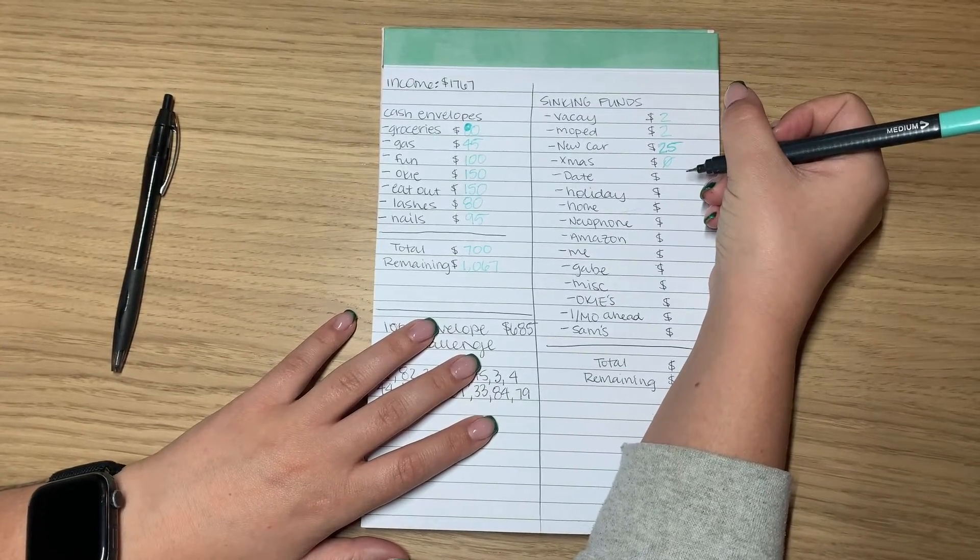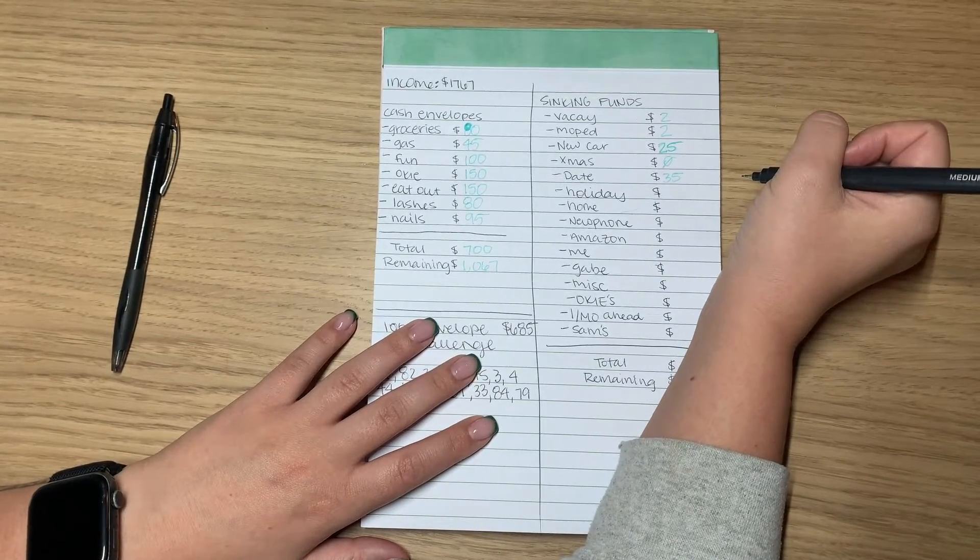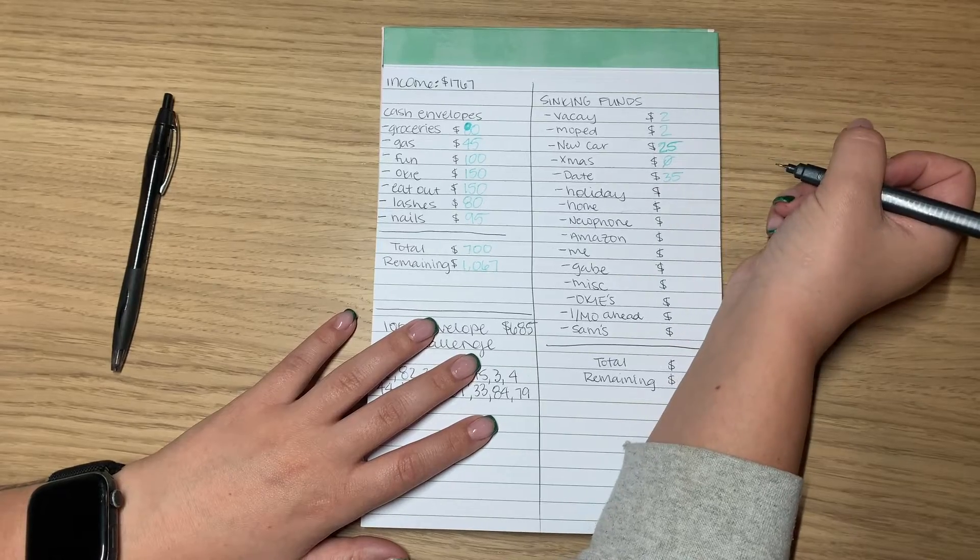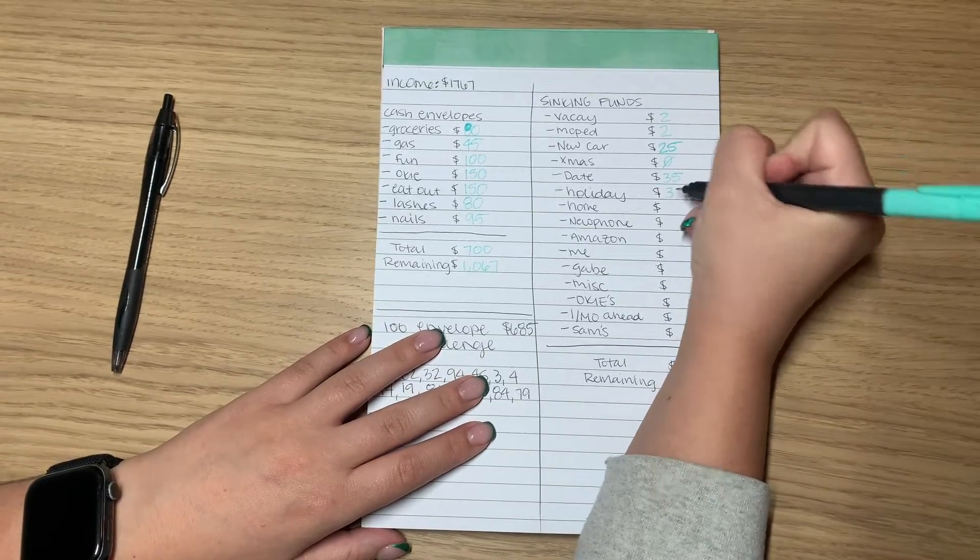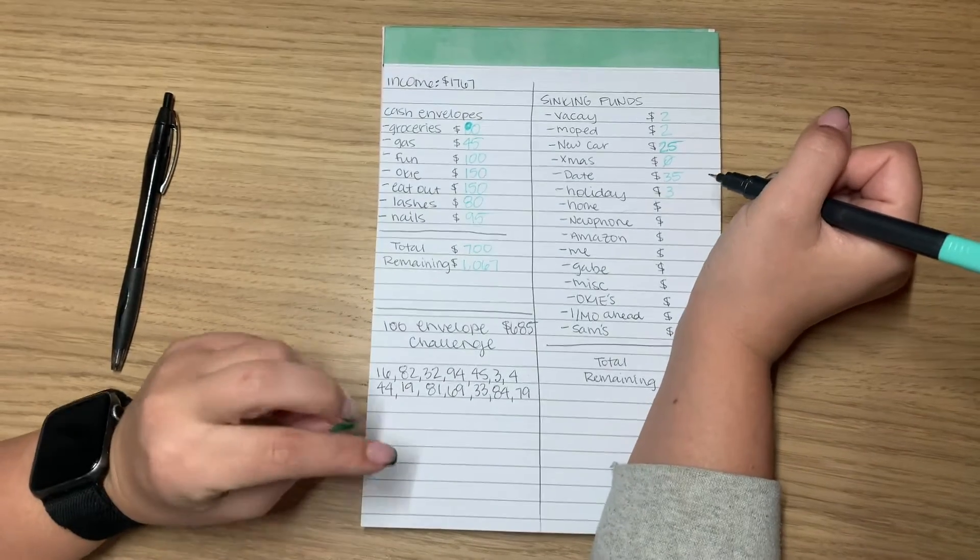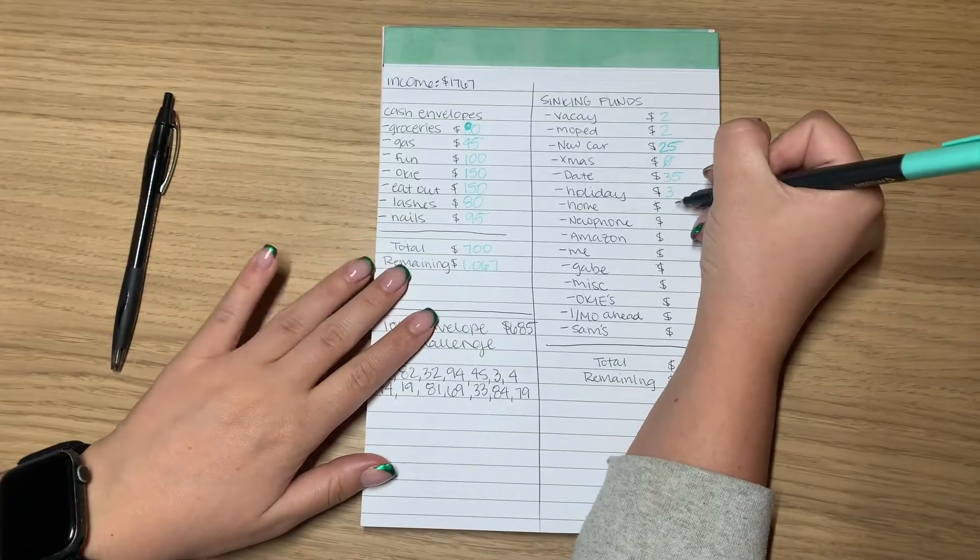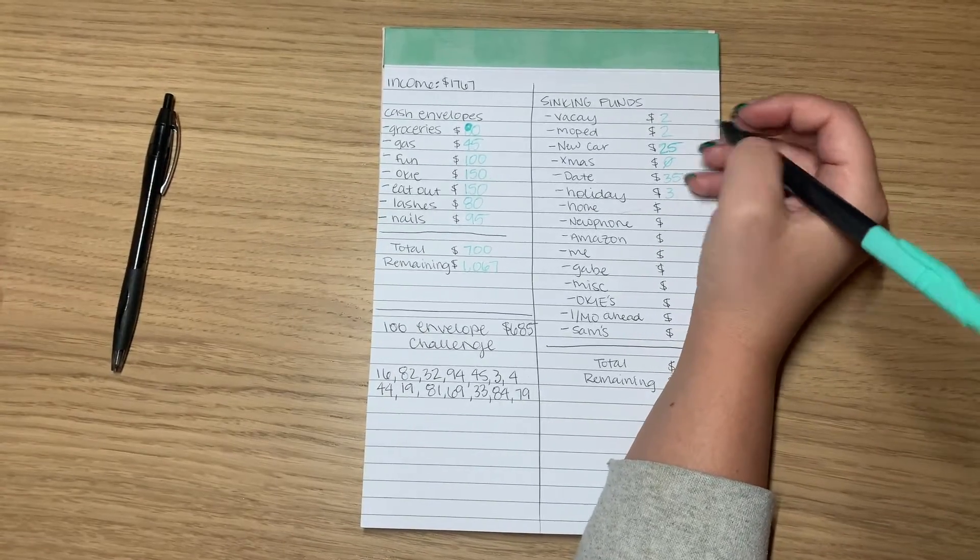Date is getting $35. I think we're going to go, I don't know where we're going to go, but might need the money. And then holiday is just getting $3. I don't have any birthdays coming up until I think February. I don't think I have any in January, but home is getting $13.